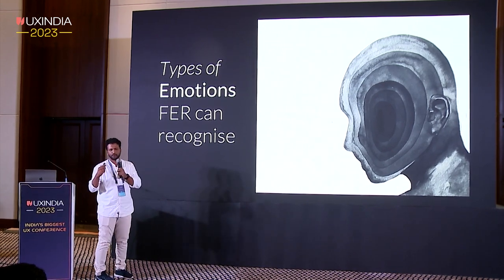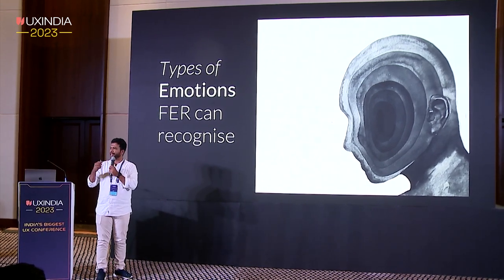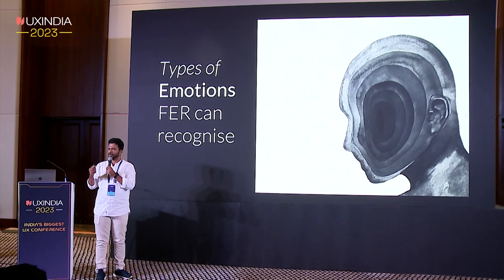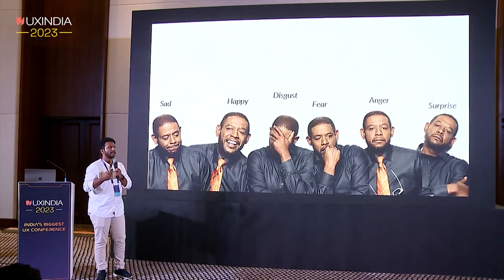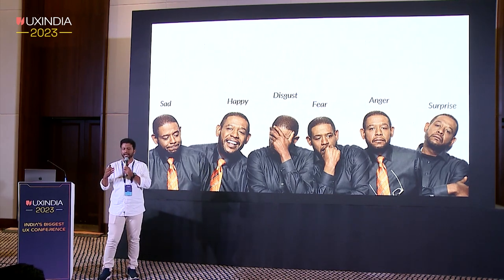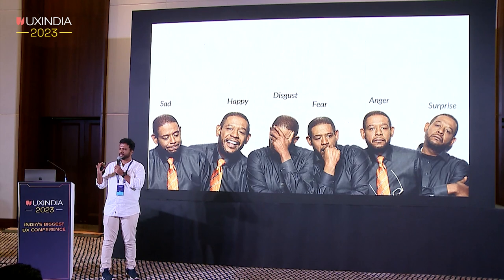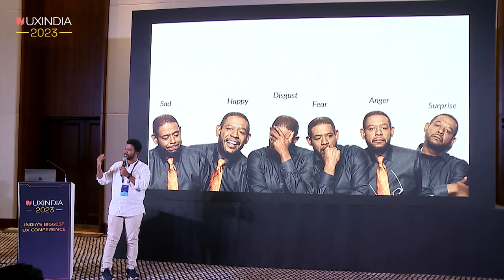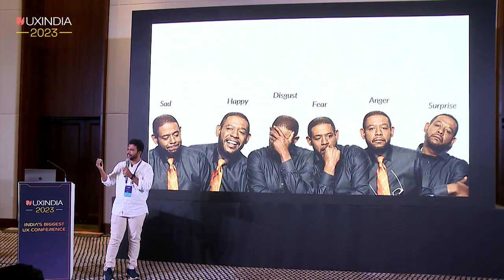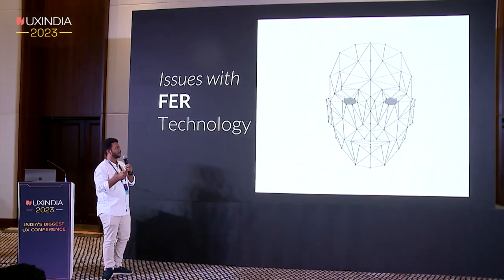The kinds of emotions that AI can analyze from human beings include sadness, anger, and happiness. These are the generic human emotions it can capture. There are more than these, but these are the most common emotions that AI can currently understand.